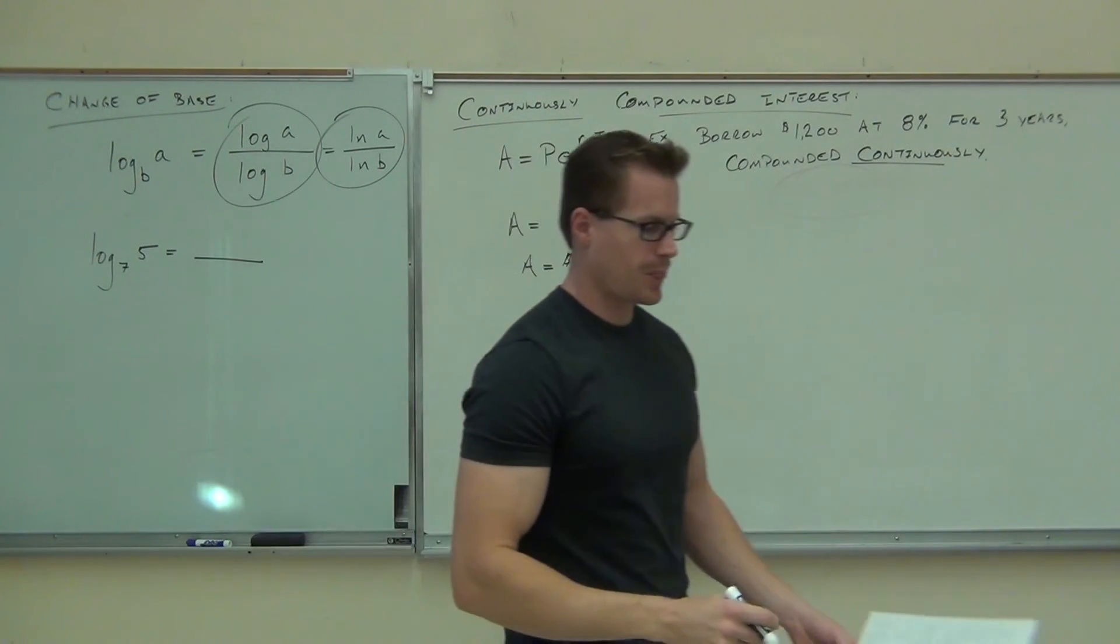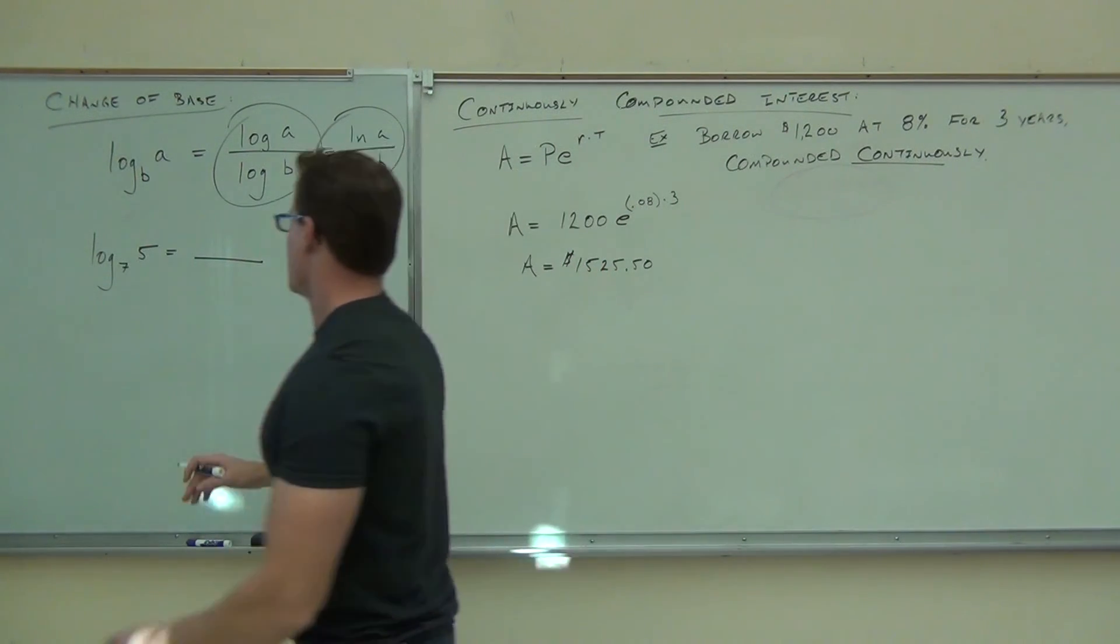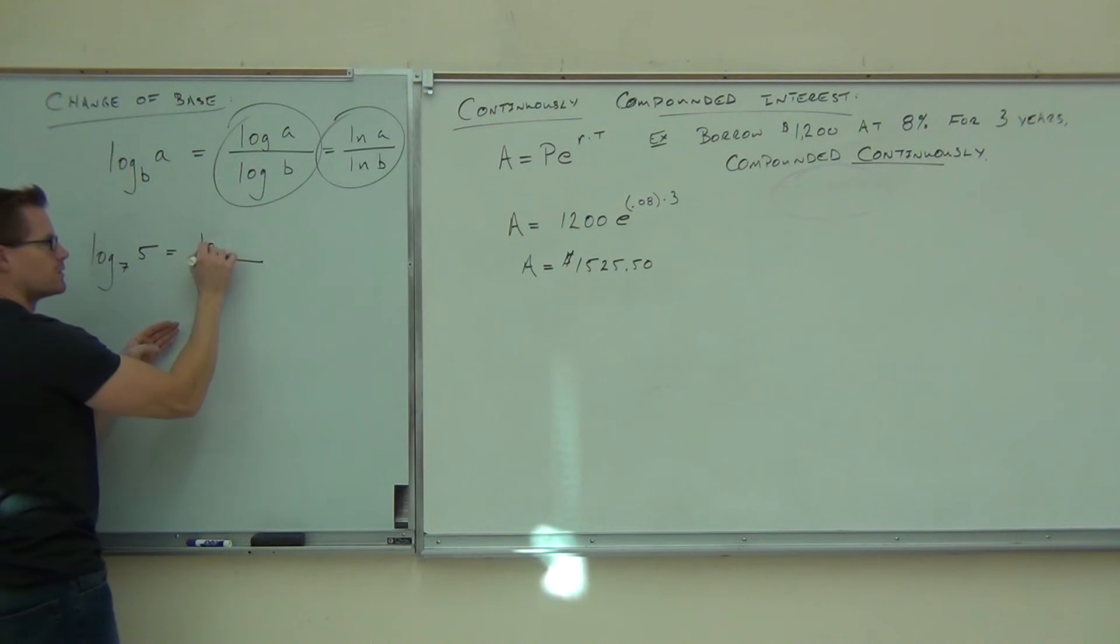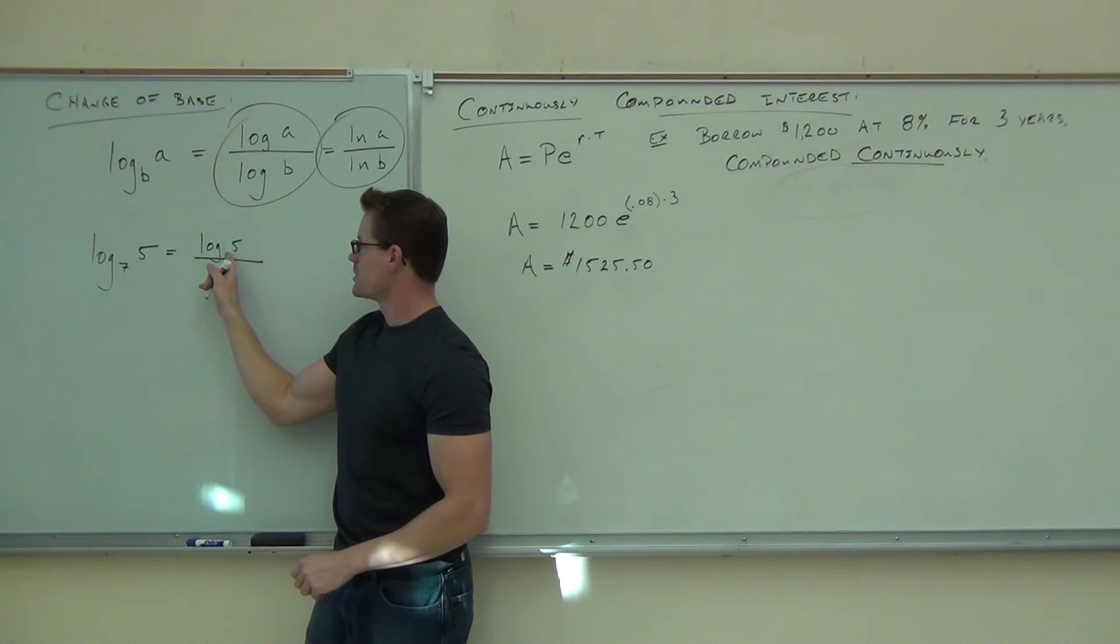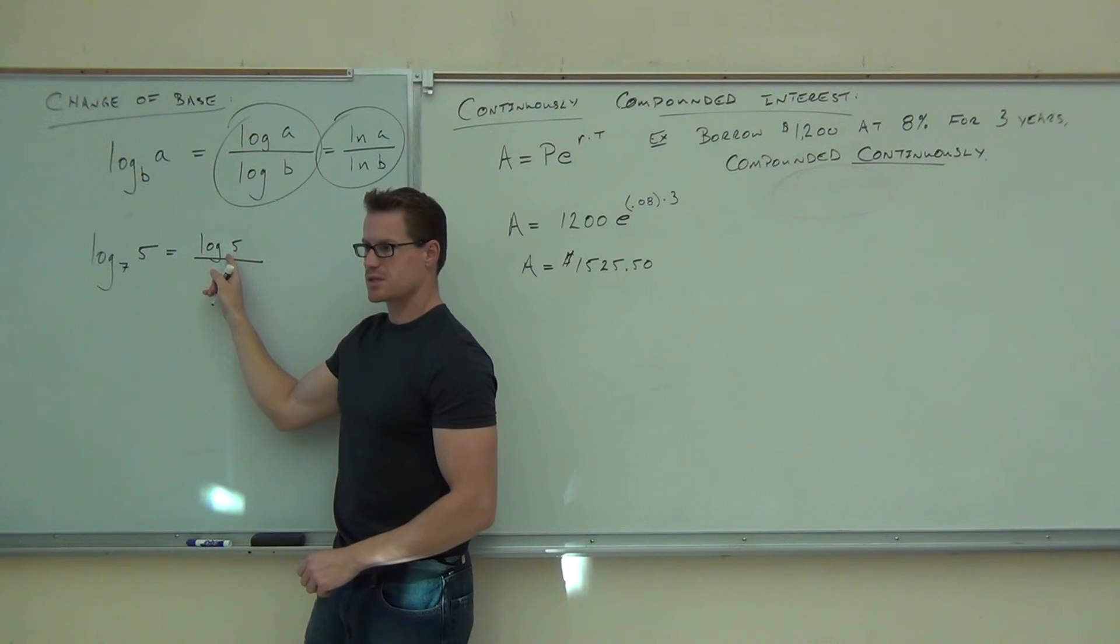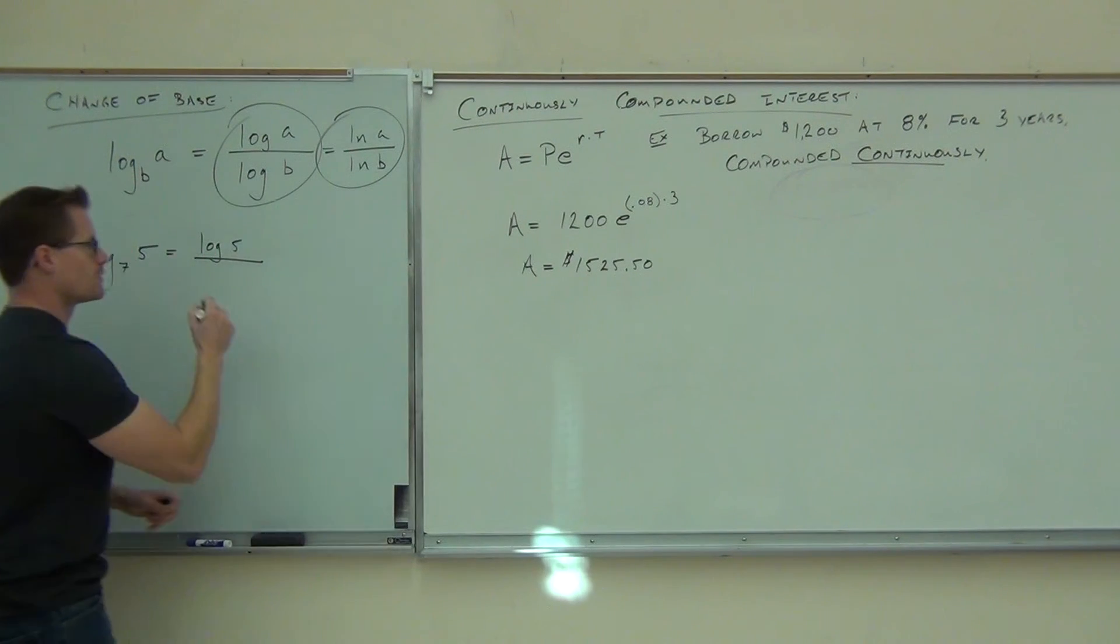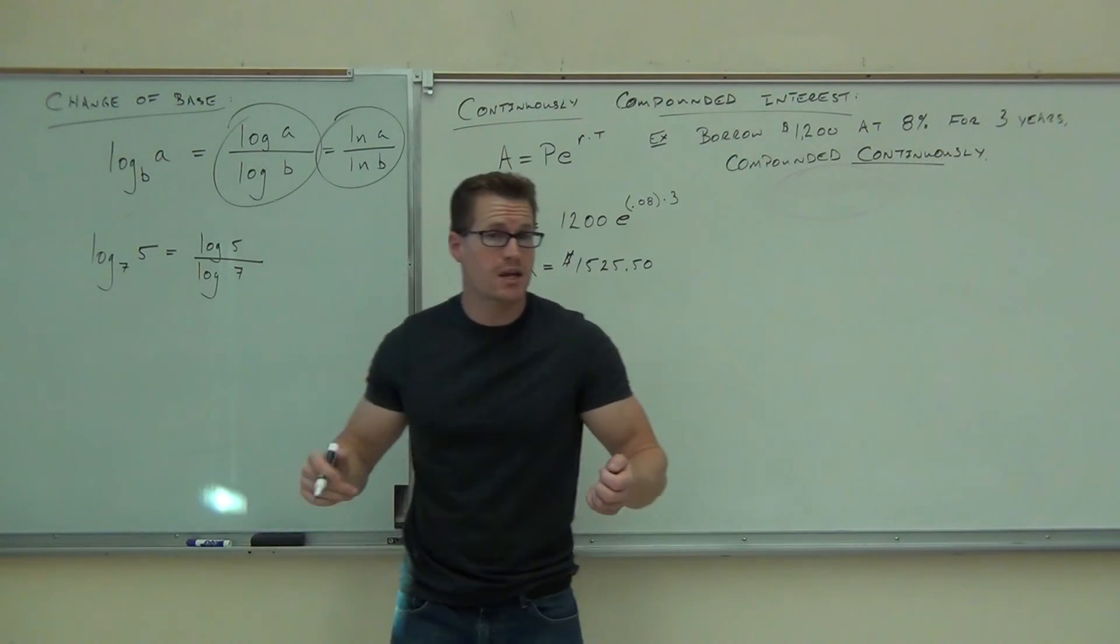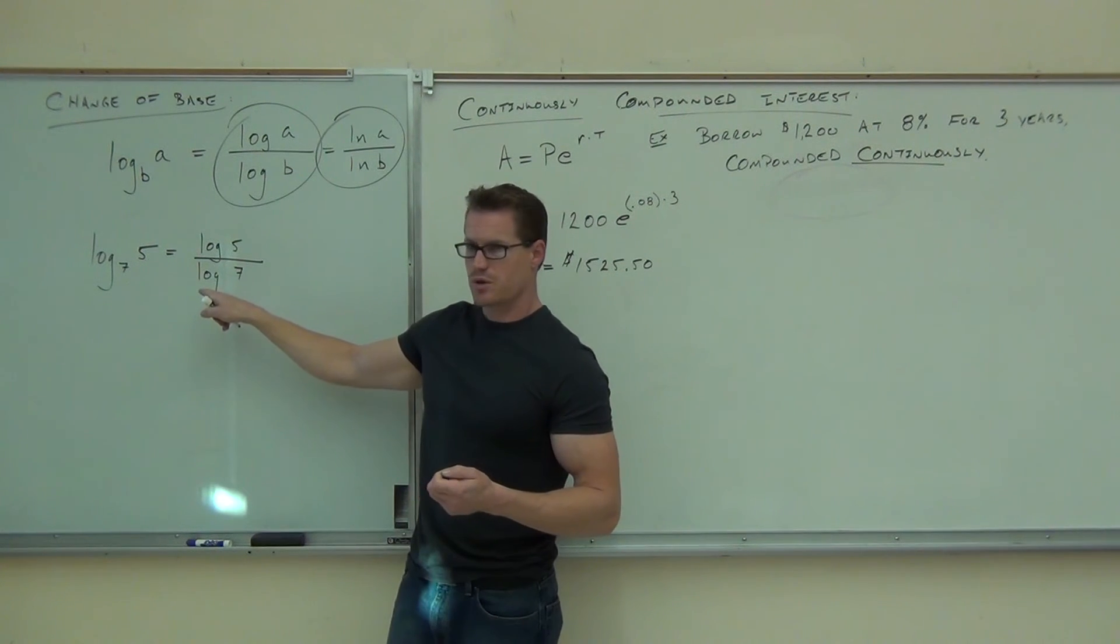Log base 7 of 5. Here's how you change your bases. We go, okay, what's going to be on the top of our fraction over here? Log of 5. Log of 5. What base is that? 10. This now is log base 10. Does that make sense? What's this going to be down here? Log 7. Log 7. Log base 10 of 7. So we've just changed a log base 7 into a log base 10 over a log base 10. You with me on this?